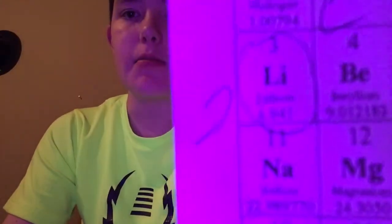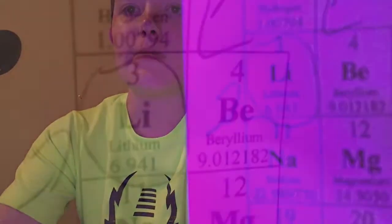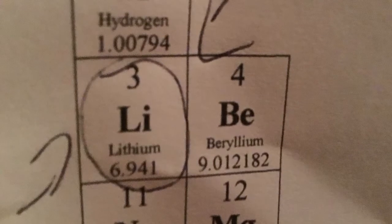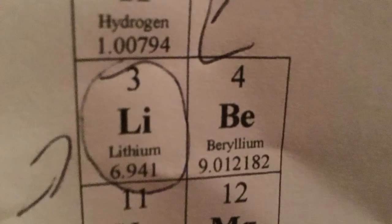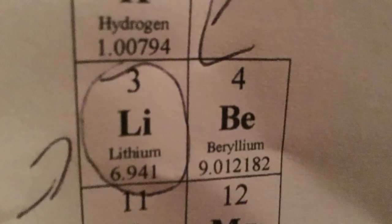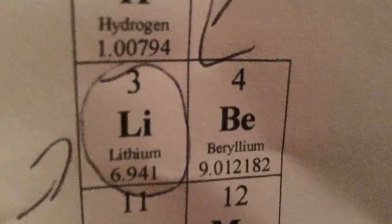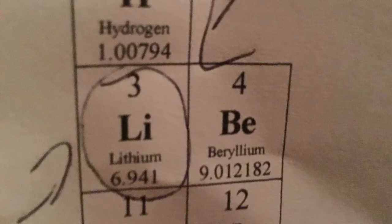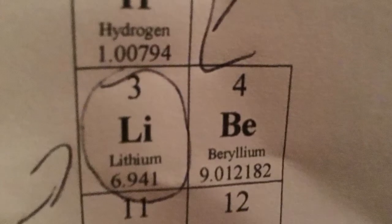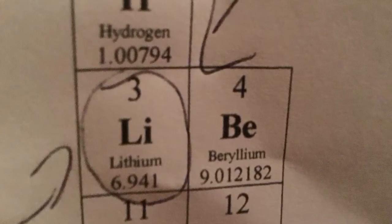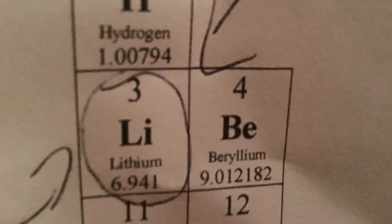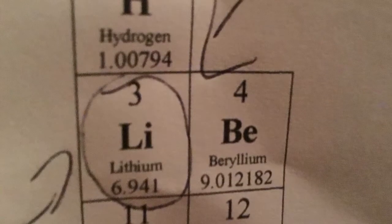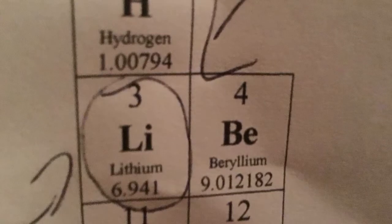First we're going to look at is lithium. You can see that in the picture the atomic number of lithium is 3, so that's how many protons it has. The proton is a positively charged particle in the atom, and so in order to make it a stable atom you must have the same number of negatives which are the electrons. This means that there's 3 electrons to balance out the electric forces.